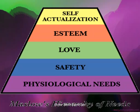On the bottom level of the hierarchy, we have the physiological needs, which include things like oxygen, food, water, elimination, and rest — things we have to have to survive. Safety includes needs such as security, protection, stability, and order. With love, we see belonging, affiliation, and relationships develop. Esteem is related to self-esteem, competency, and achievement. Self-actualization is the highest level.